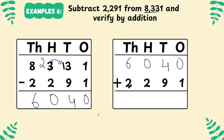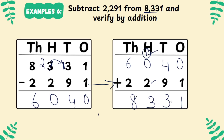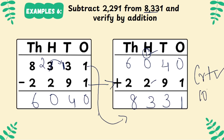Now, add. 0 plus 1 is 1. 4 plus 9 is 13 — write 3, carry 1. 1 plus 2 is 3. 6 plus 2 is 8. Do you get the same answer? 8,3,3,1 — same answer. Your subtraction is 100% correct.